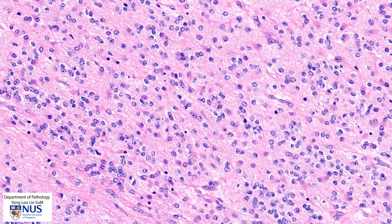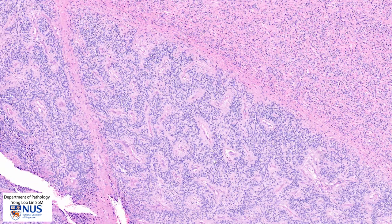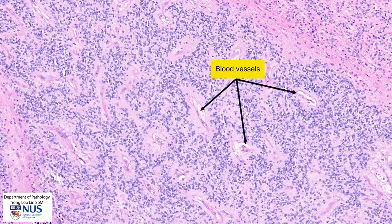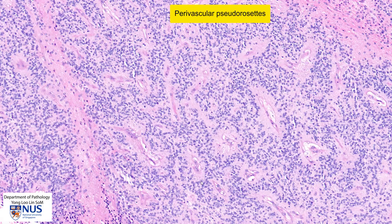Let's now move down to the more interesting bluish area. At this magnification we can see that there are some structures within the center of the paler areas — these are blood vessels — and the tumor cells appear to palisade around the blood vessels, surrounded by this zone of hypocellular fibrillary material. These are known as perivascular pseudorosettes and they are frequently seen in ependymomas.